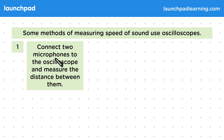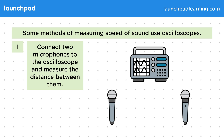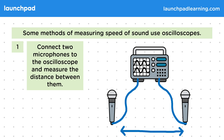So for step one, connect two microphones to the oscilloscope and measure the distance between them. Most oscilloscopes are capable of having multiple input devices connected to them. We can connect two microphones to the oscilloscope and measure the distance between their sensors. Let's suppose this is 0.8 metres.